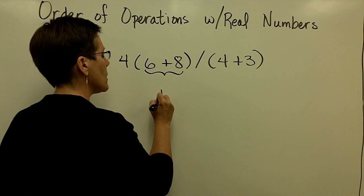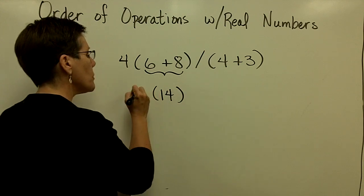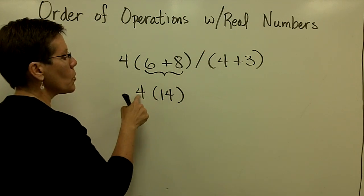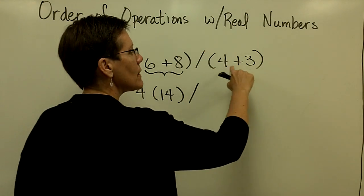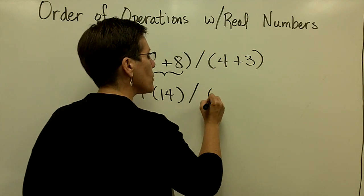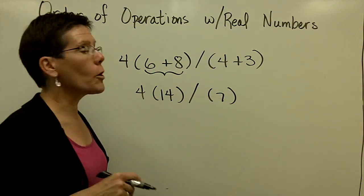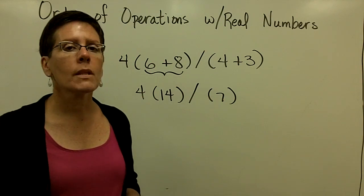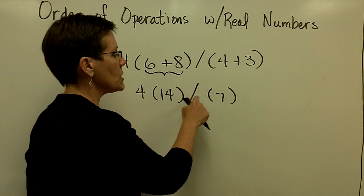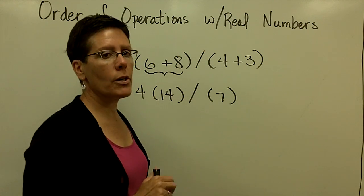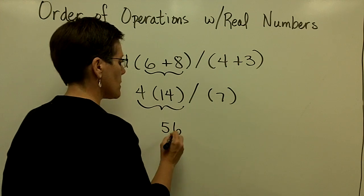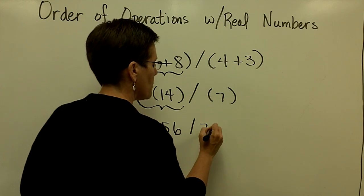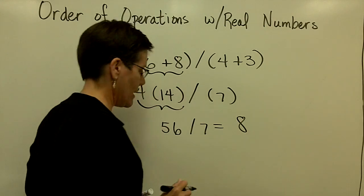So 6 plus 8 is 14. Put parentheses around it, because in front of it is a 4 times whatever's in that parentheses. Bring that division symbol down, and this is in parentheses too. Order of operations says to do that. 4 plus 3 is 7. Now I've got multiplication and division. I need to work from left to right. So 4 times 14 is 56, and 56 divided by 7 is 8.